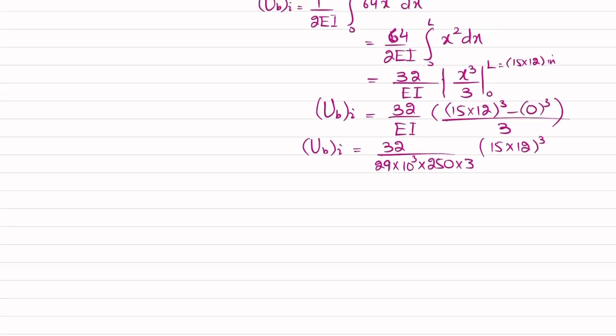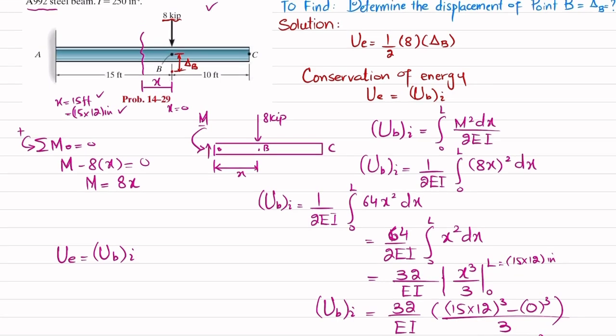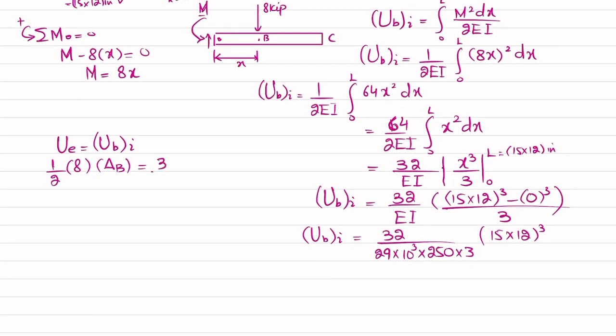Now we use conservation of energy. Ui equals Ubi. What is Ube? That is 1/2 times 8 multiplied by delta B, equal to this term: 32 divided by 29 times 10 to the power 3, multiplied by 250, multiplied by 3,